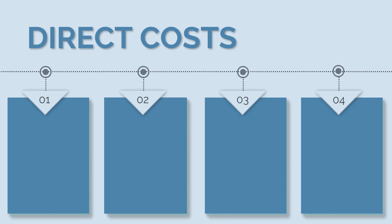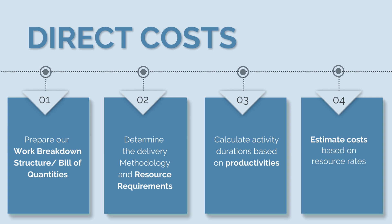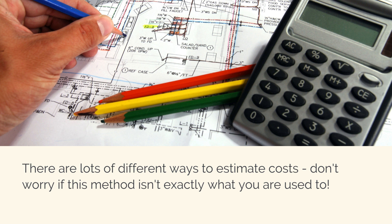Calculating direct costs is a process in itself. First, we prepare our work breakdown structure and bill of quantities. Next, for each activity in our WBS, we need to understand exactly how we are going to complete that construction activity and what resources are required. Then, based on productivity rates and the quantum of work from our bill of quantities, we estimate the activity duration. From our base resource costs, we then calculate our resource rates. It's worth noting there are lots of different ways to estimate costs, so if this method differs slightly from what you're used to, have a go and see if it works for you.